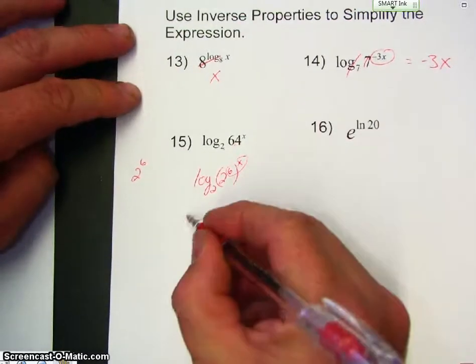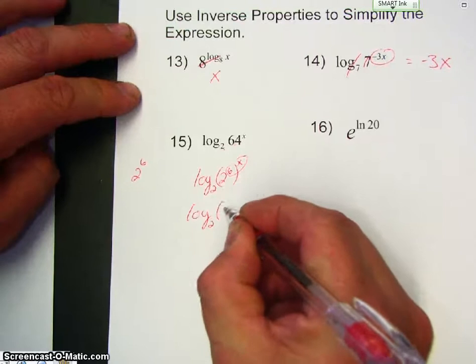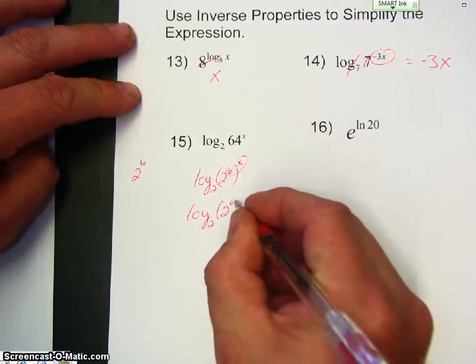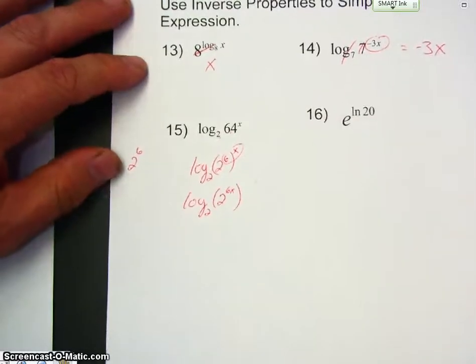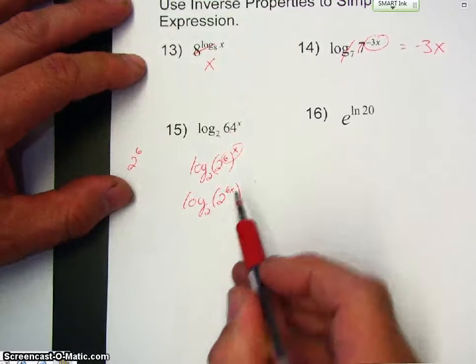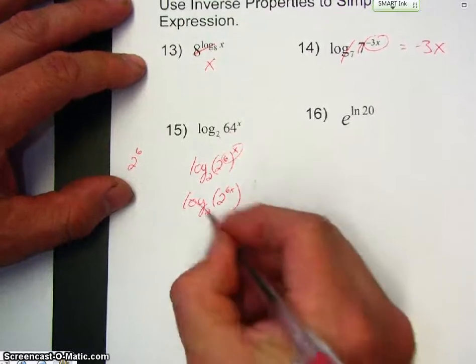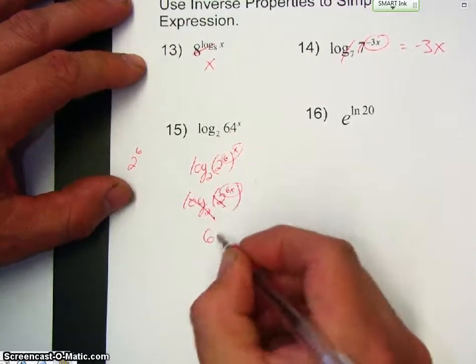That means I can multiply those two. Now, the base of the log and this base are the same, so I can cancel those out. All I'm left with is 6x.